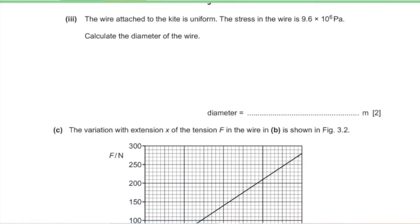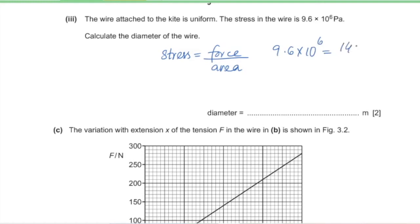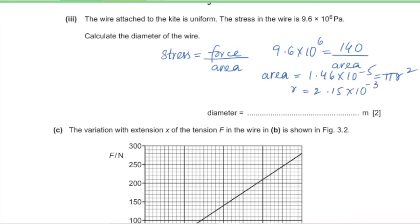Part 3: the stress in the wire is 9.6 × 10⁶ Pa. Calculate the diameter of the wire. Stress = force/area, so 9.6 × 10⁶ = 140/A, giving area = 1.46 × 10⁻⁵ m². Since area = πr², we get r = 2.15 × 10⁻³ m, and diameter = 2r = 4.31 × 10⁻³ m.